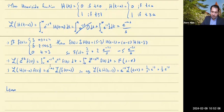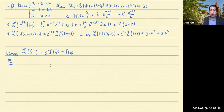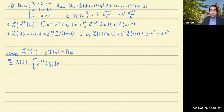This next property is so important that I'm going to label it a lemma. This is what happens when you take the Laplace transform of a derivative. The Laplace transform of f prime is equal to s times the Laplace transform of f minus f of 0, where f of 0 is just the constant f evaluated at zero. This is key because it's what we're going to be using to apply the Laplace transform to differential equations.